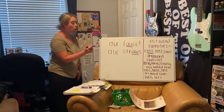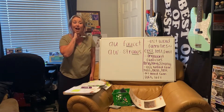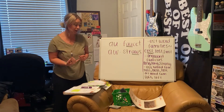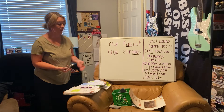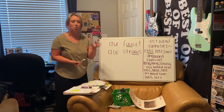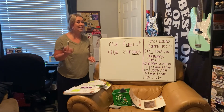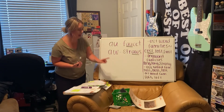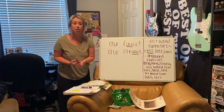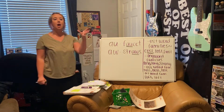We also have our OSS word family that also says AW. Those words are toss, boss, and loss. OSS is going to give you that same AU/AW sound. We also have the AU/AW sound in the OFT word family: soft and loft. OFT says 'oft.' So that's just something to remember as you're reading.